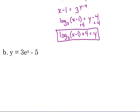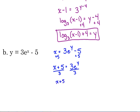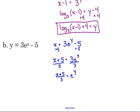Let's do one with e. y equals 3 times e to the x minus 5. What typically throws people off is the order to solve it in — it's just like solving an equation. Switch x and y: x equals 3 times e to the y minus 5. Start by adding 5 to both sides: x plus 5 equals 3e to the y. Then divide by 3 because the exponential expression is not by itself yet. Now we can put it in log form. We use the natural log with e, so ln of (x plus 5) over 3 equals y.